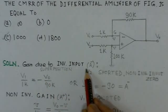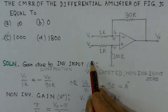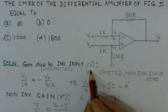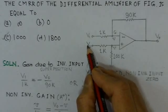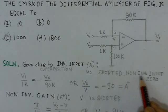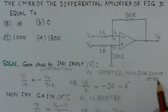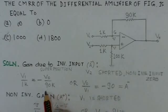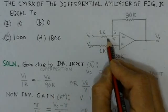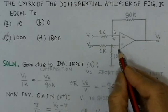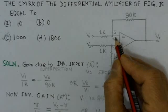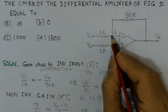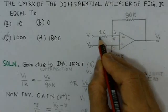The gain due to the inverting input is indicated as A-minus. Since we are applying superposition, we consider the non-inverting voltage source V2 as being replaced by its internal impedance — that is, it is shorted. We can then find the corresponding equation for the inverting input case. With V1 applied and V2 set to zero, the voltage V at the non-inverting terminal is also zero, making it a virtual ground point.